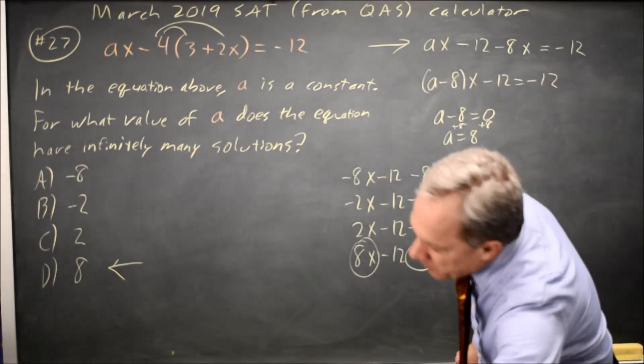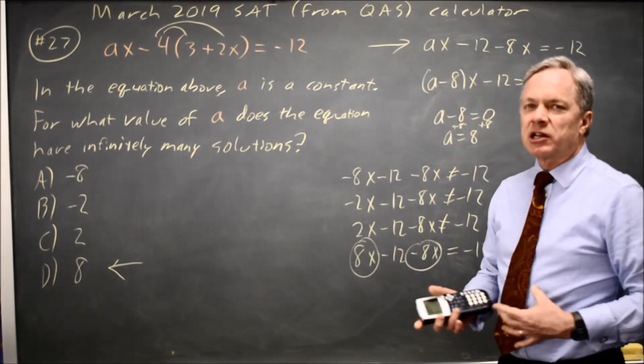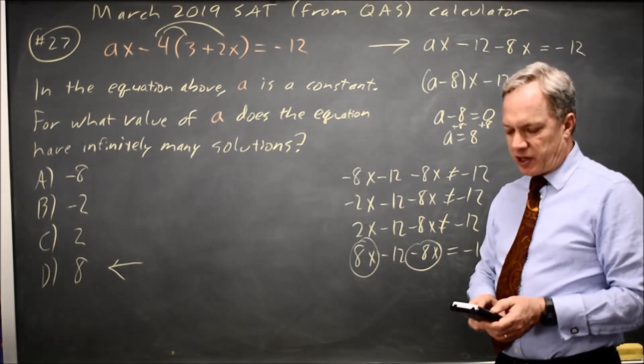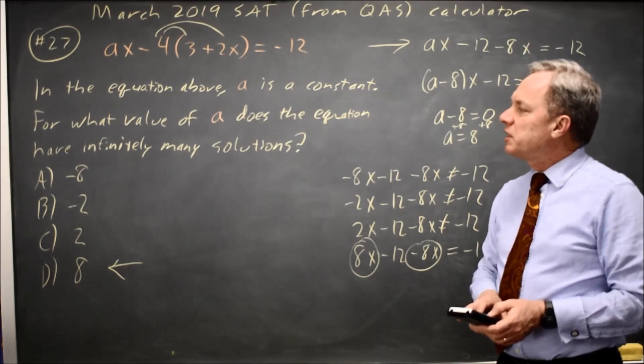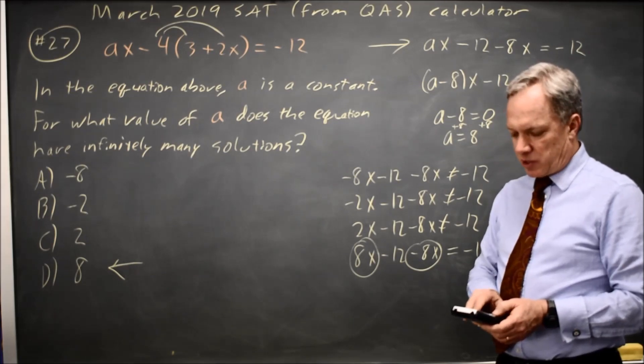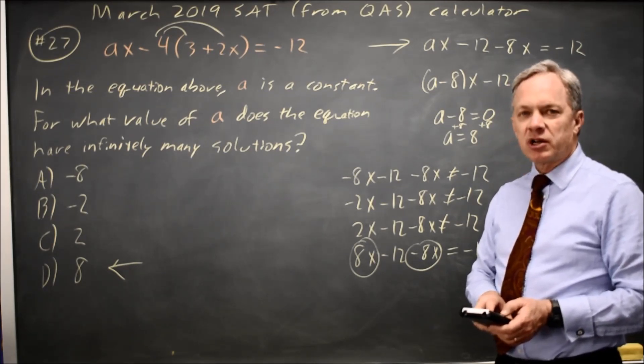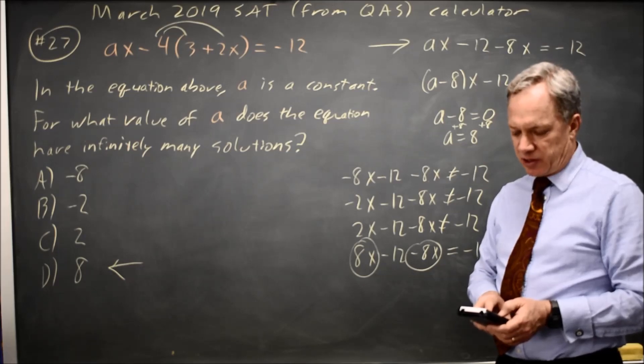A third option is the graphing calculator. I can put the left side into Y1 and look at the table of values. If I put negative 8 in for A in Y1, my table shows Y1 varying. It's not always negative 12, only at X equals 0.